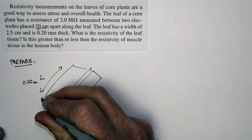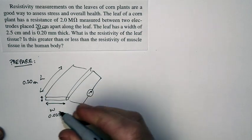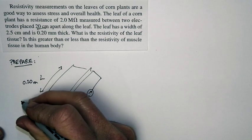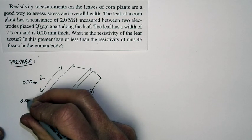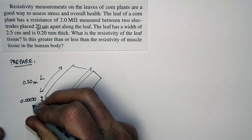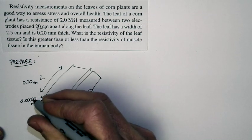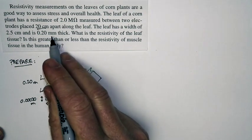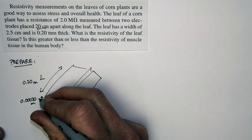And the thickness of the leaf, and plants have pretty thin leaves as most plants do, is 0.00020 meters thick. That's 0.2 millimeters. That's our thickness right there.